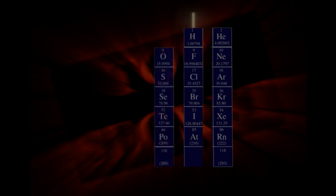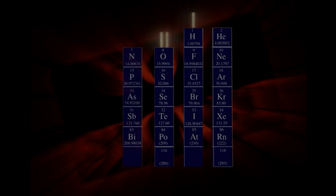The rightmost column in the table has no great urge to make bonds with other atoms. The column to its left wants to make one bond. The second column from the right wants to make two bonds. Third column atoms want to make three bonds, and so on.